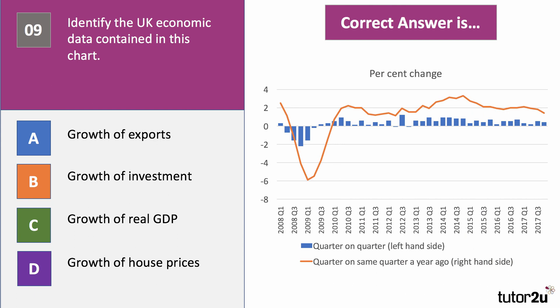The answer to chart nine is C — it's the growth of real GDP, showing the economic cycle. You can see the recession in 2008–2009 with five quarters of negative growth, and occasional dips in 2012 but not enough for a recession (you need two successive quarters of negative growth). Following the orange line, the rate of growth has been slowing since about 2015, now a little below 2% — the British economy grew by 1.8% in 2017.